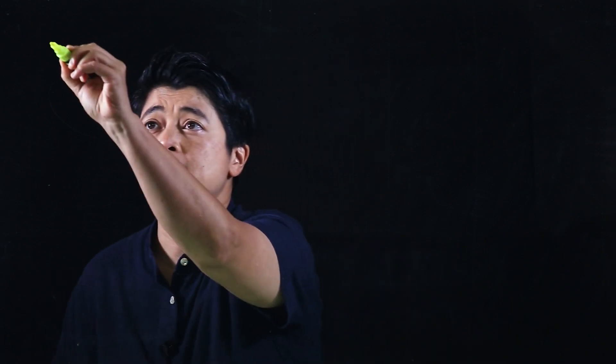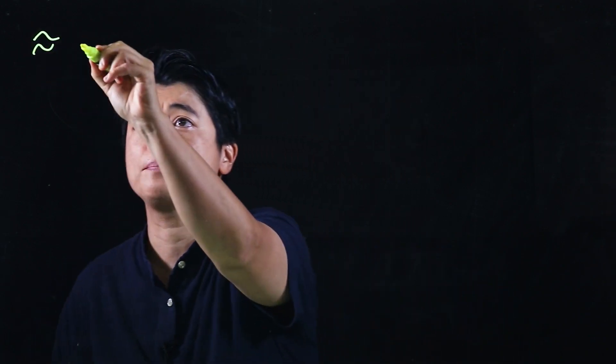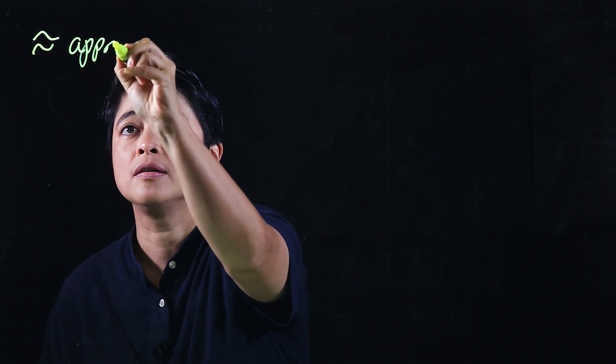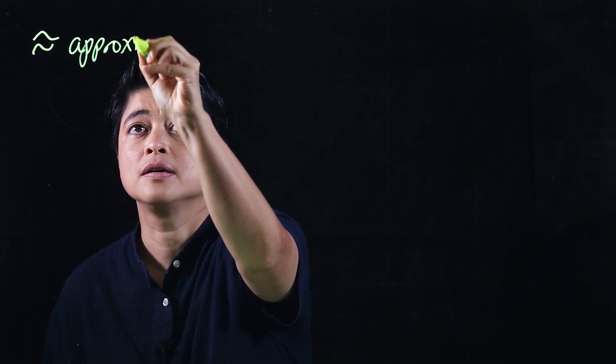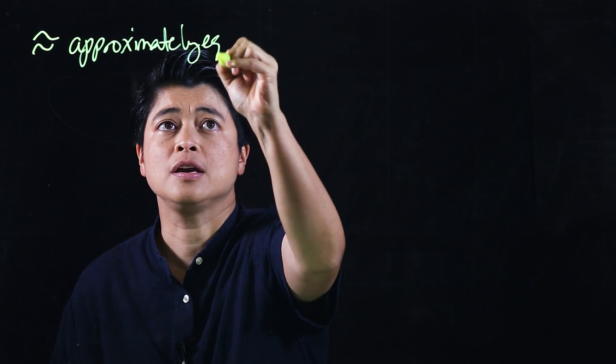Chapter one, lesson four is about rounding and estimation. This is a completely new topic for the kids. If we see that symbol, that means it's approximately equal.